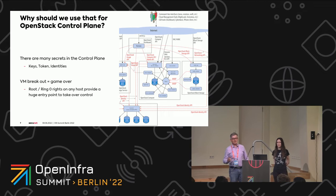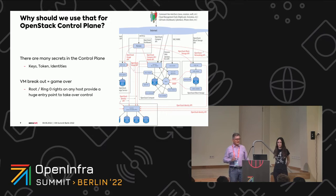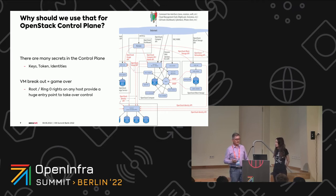Especially when it comes to key management and key storage — like Barbican and Keystone — it's not good to have these secrets in the main memory and RAM of the machine, because then it's attackable. If someone gets physical access, they can read out the memory. There are even more attacks, like cold boot attacks, where you can read out the memory even when the machine is switched off and get secrets stored in the DRAM.